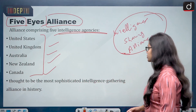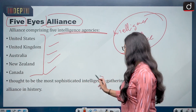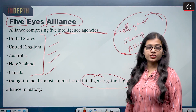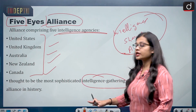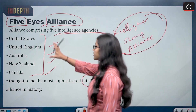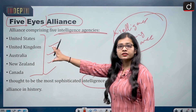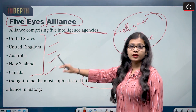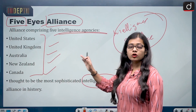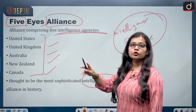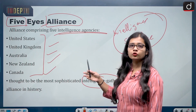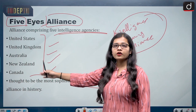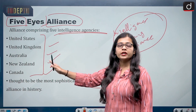It is thought to be the most sophisticated intelligence gathering alliance in history. You can imagine the countries involved — they are technologically advanced, and since the time of World War II these countries have been very dominant on the global scale.